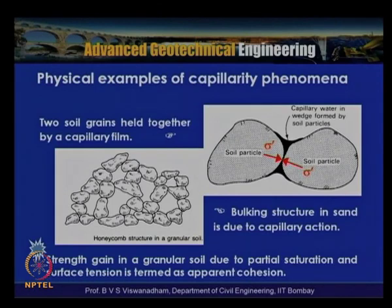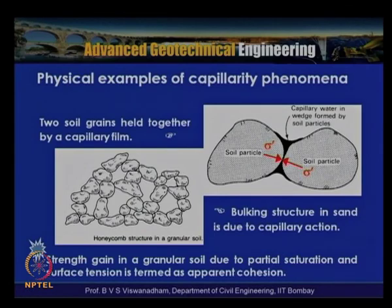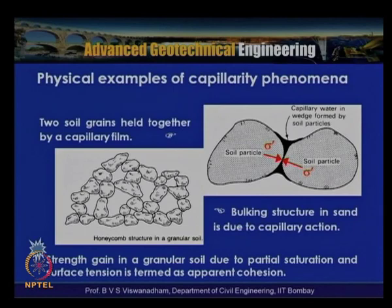There are two types of cohesion: true cohesion and apparent cohesion. True cohesion is a property of the soil arising from the type of mineral present — for example, carbonates can induce cohesion in silty soils, allowing them to stand vertical to some extent. In contrast, when a granular soil is partially saturated and surface tension holds the grains, the resulting cohesion is termed apparent cohesion.